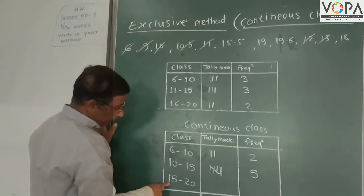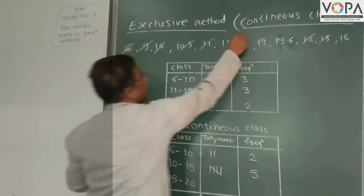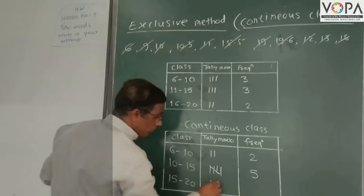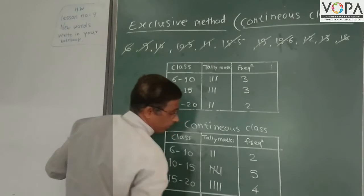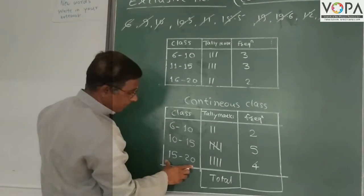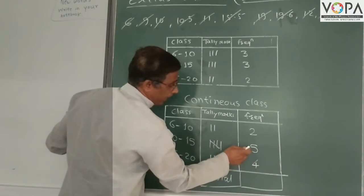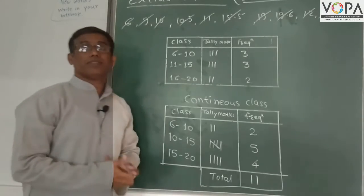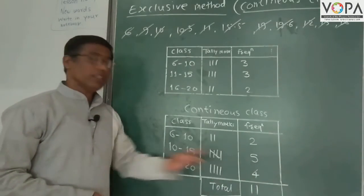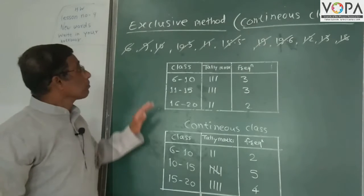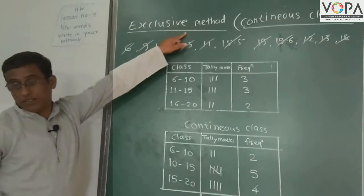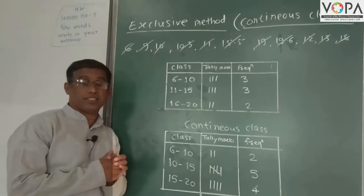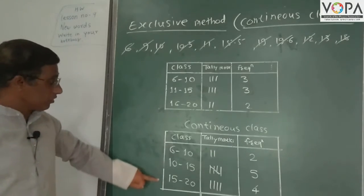For class 15 to 20, we count 1, 2, 3, 4 — frequency is 4. The total is 2 + 5 + 4 = 11, which matches the total number of observations. This is the exclusive method — such a method is called the exclusive method of classification, and these are called continuous classes.